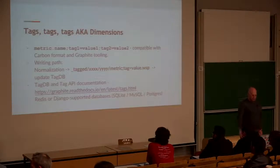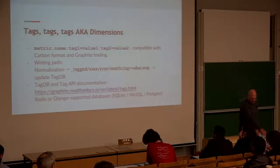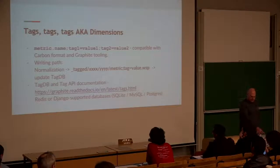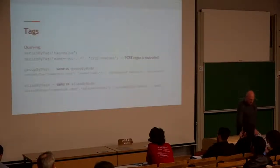So now we have it. This is the format of the metric with tags. It's compatible with Carbon format. Tags are normalized first, then it's put in normal Whisper file. And we have a database for storing tags named TagDB. You can use Redis or a normal Django supported database like SQLite, MySQL, or Postgres.